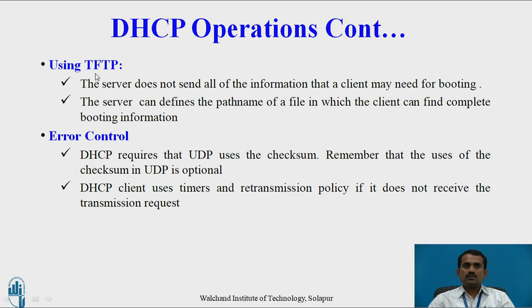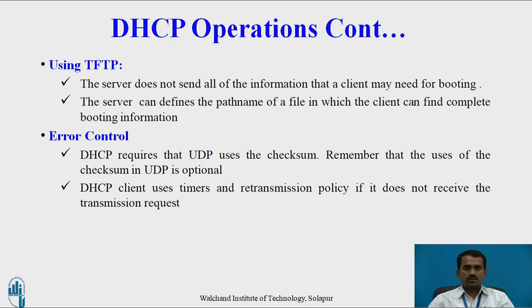The fourth operation is using TFTP — Trivial File Transfer Protocol. The server does not send all the information the client may need for booting; instead, the server defines the path name of the file in which the client can find complete booting information. The fifth operation is error control. DHCP requires that UDP uses the checksum — note that the use of checksum in UDP is optional. The DHCP client uses timers and retransmission policy if it does not receive a response. Checksum is used for finding errors in a packet.